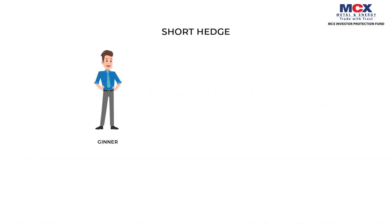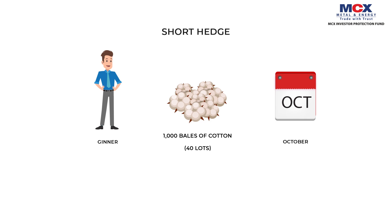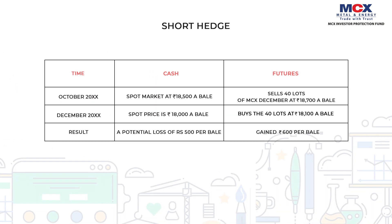Short hedge: Assume Ajina is holding stock of 1,000 bales — which is 40 lots of cotton — in October. He wishes to lock in the price of his 40 lots in October and protect himself against falling prices. The spot price of cotton in October is Rs. 18,500 a bale and the MCX December contract price is Rs. 18,700 a bale. The ginner sells 40 lots of MCX December contracts in October at Rs. 18,700 for delivery in December. Prices fall in December; the ginner sells his stock in the physical market for Rs. 18,000 a bale and takes an opposite position in the futures market by buying 40 lots of MCX December contract at Rs. 18,100 a bale.